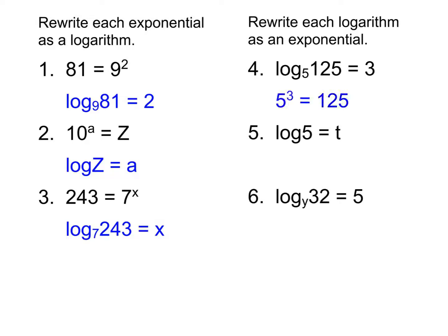Then for number 4, remember that the base of the logarithm is the base of our exponential. So the 5 is the number we're raising to the power. Log always equals the exponent. So since this log equals 3, it's got to be 5 to the power of 3, and then it equals whatever the other number is, which is 125. And again, follow that same pattern. Number 5 again follows up on that work from yesterday where we don't write the base in. That means the base is 10. So it ends up being 10 to the t equals 5.